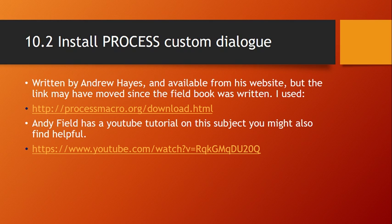10.2 covers how to install the PROCESS custom dialog box. This was written by Andrew Hayes and is available from his website, but I think the link moved since the Field book was written, so the website I used was processmacro.org/download.html. Andy Field has a YouTube tutorial on exactly how to install and configure the PROCESS custom dialog box, so if you'd like to see where somebody clicks, I've linked here how you can walk through it in real time.